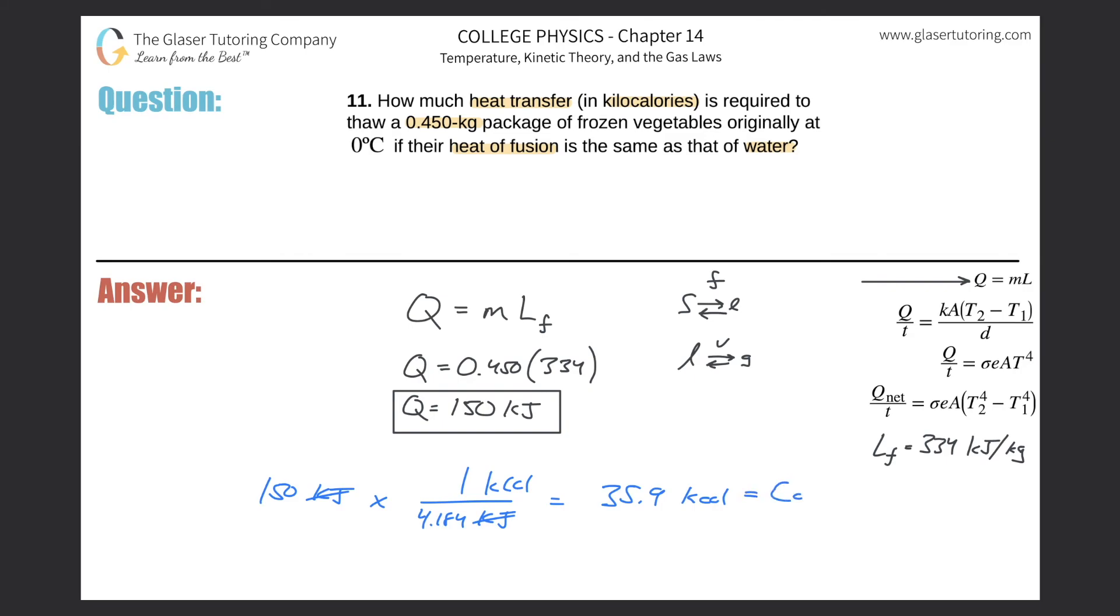This should be about 35.9 kilocalories, which is the same thing as capital Cal. On your nutritional labels the calories that are on the back are actually kilocalories, not calories, which is kind of confusing because it says calories but they're capital C calories which are kilocalories.